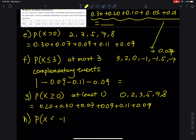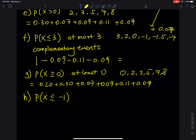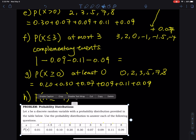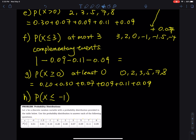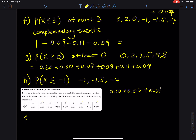Part (h): 'at most −1' means P(x ≤ −1). The x values that satisfy this are −1, −1.5, and −4. So the probability is 0.10 + 0.03 + 0.01. That is your answer.